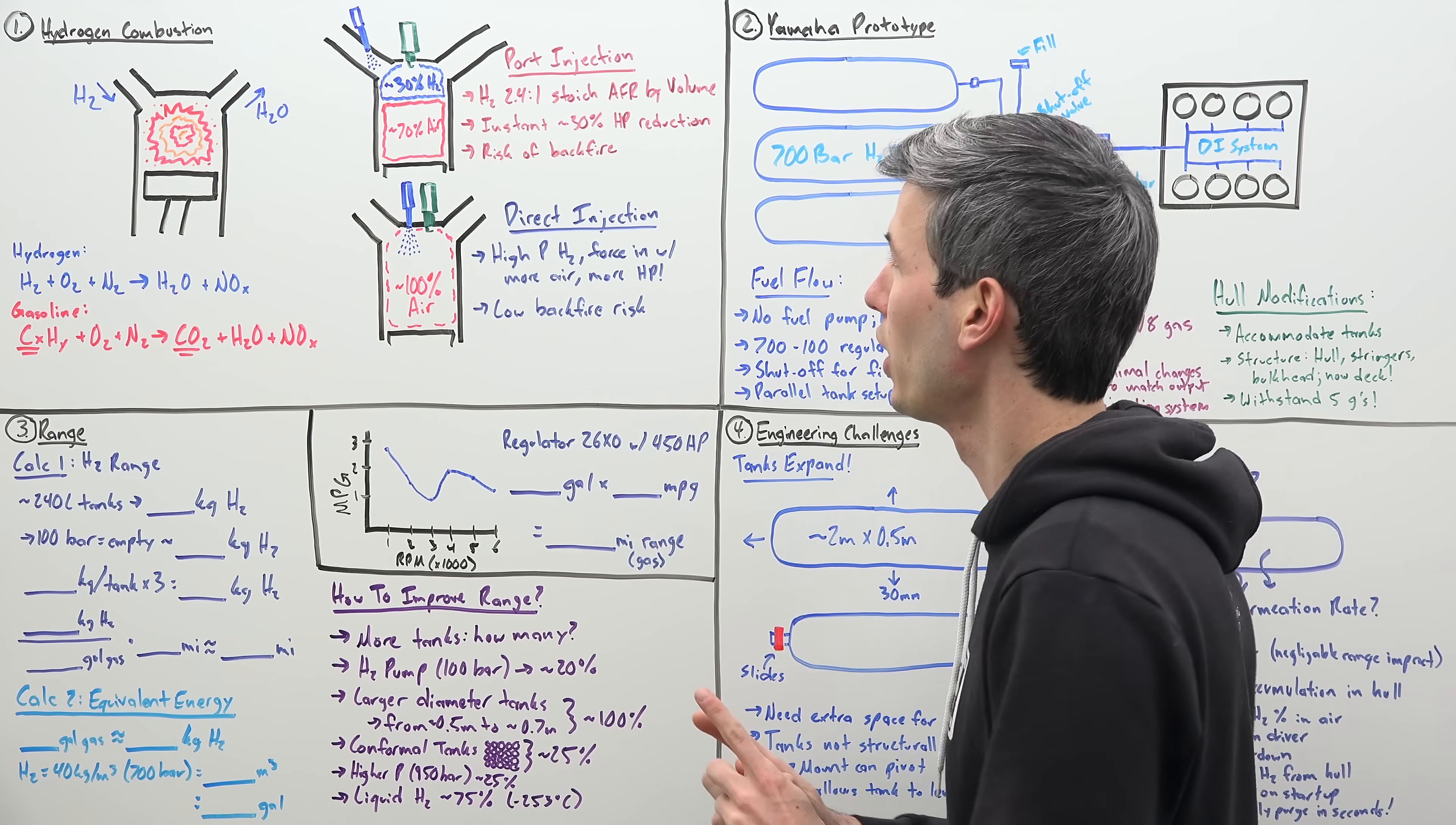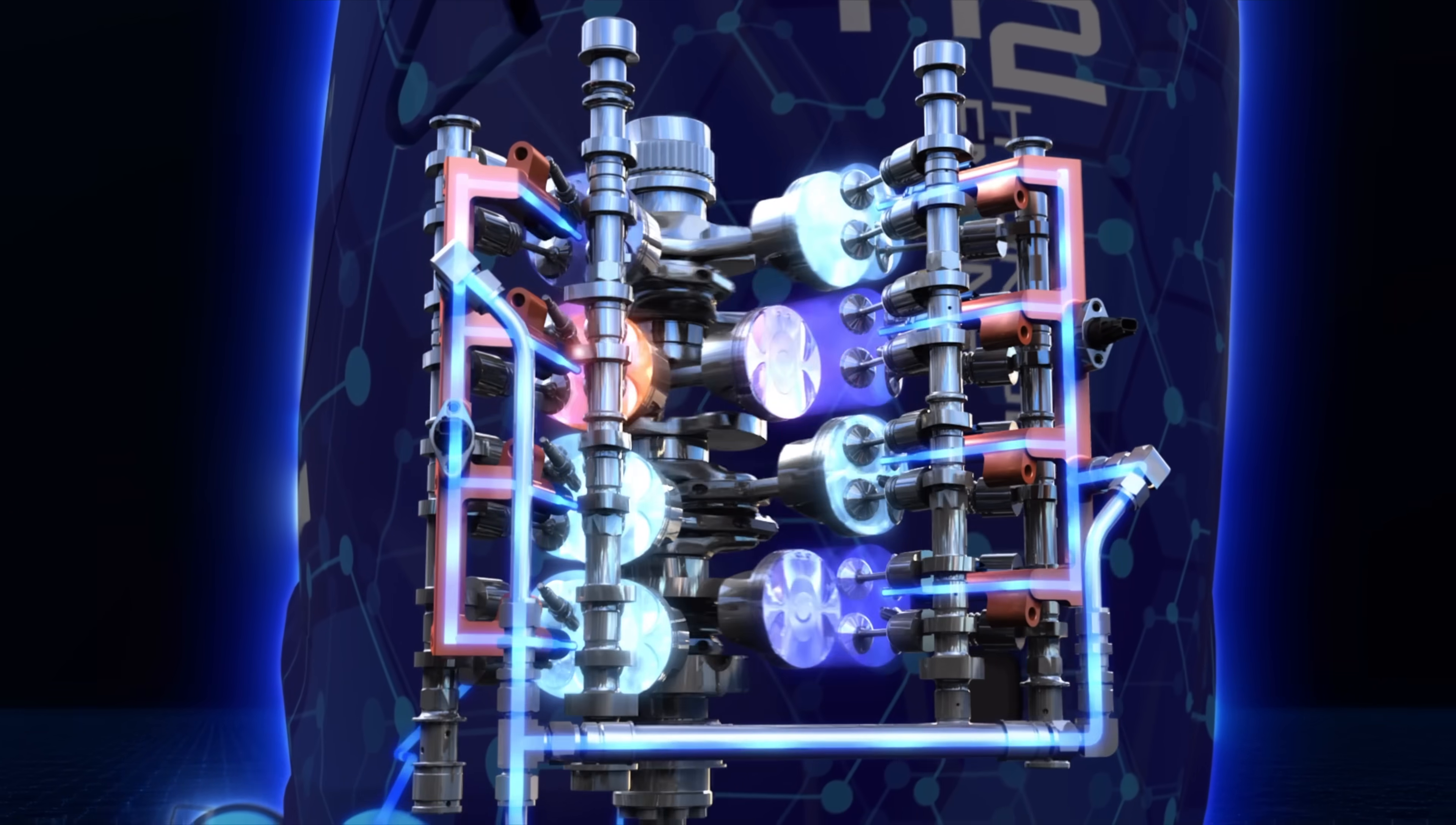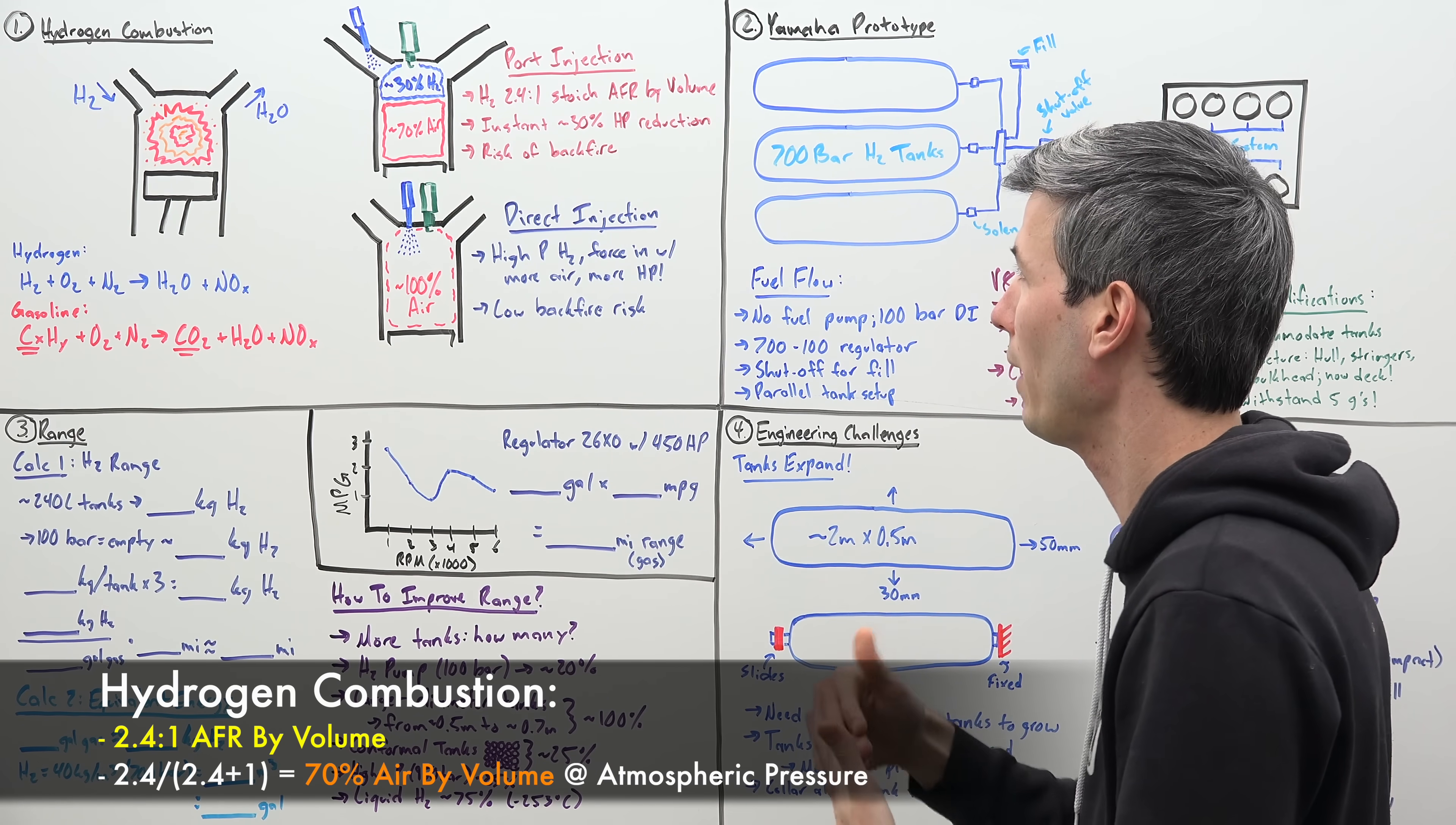Well, with port injection, you're going to have a lot of space that is just taken up by that hydrogen. So unlike gasoline, hydrogen takes up a ton of space at atmospheric pressures. So if you're dumping in that fuel in the port and then relying on this piston to pull in the air and fuel, well, hydrogen has about a 2.4 to 1 stoichiometric air fuel ratio by volume.